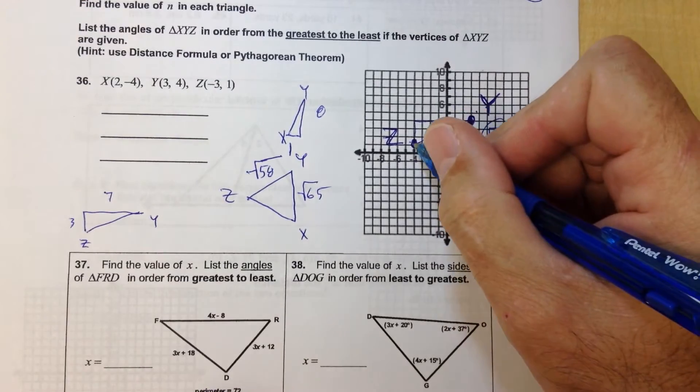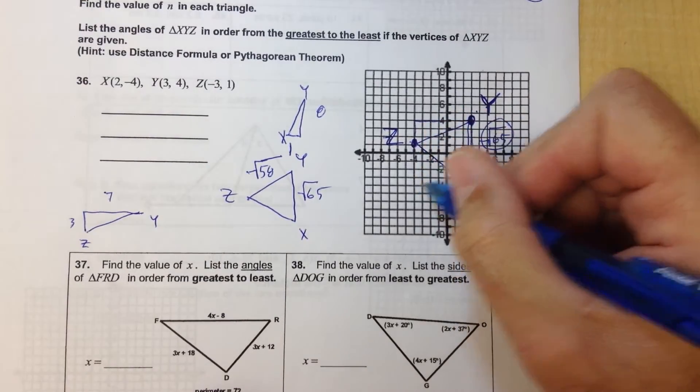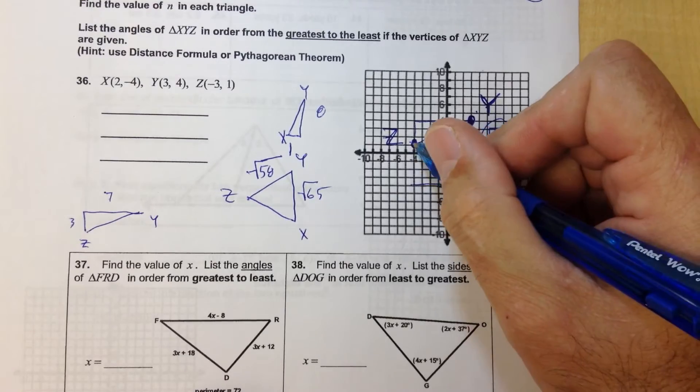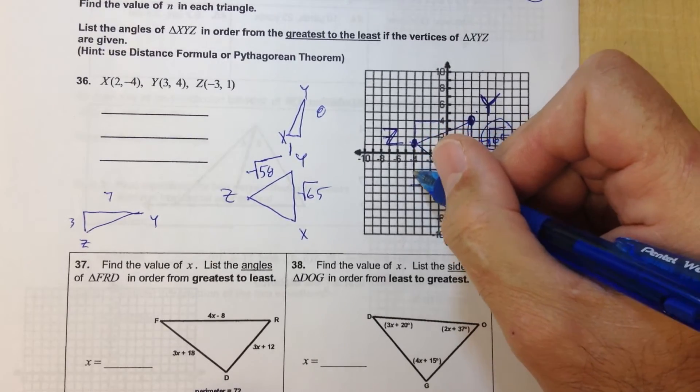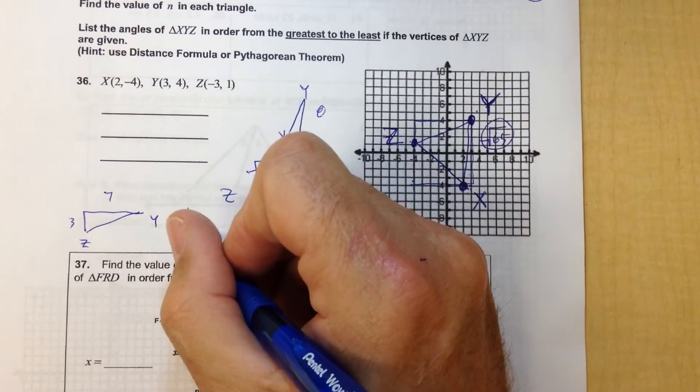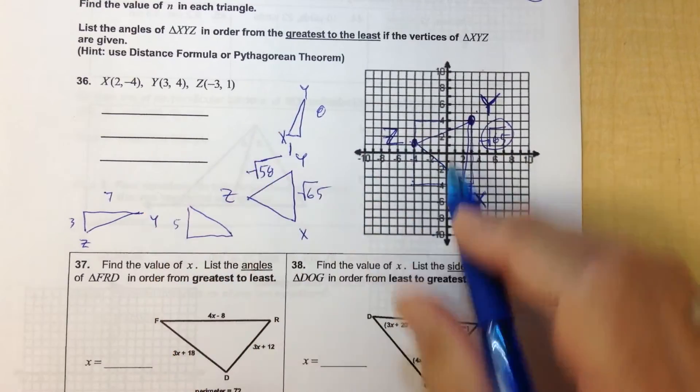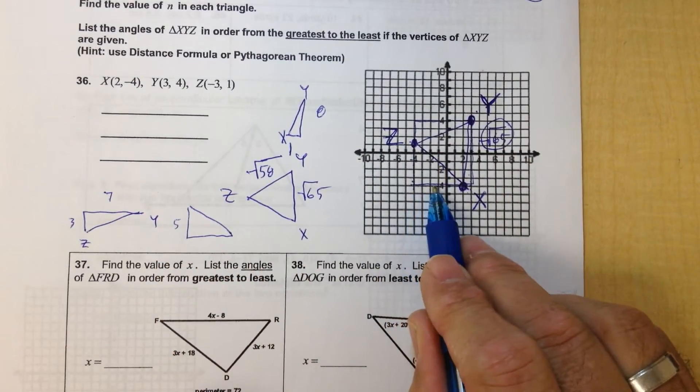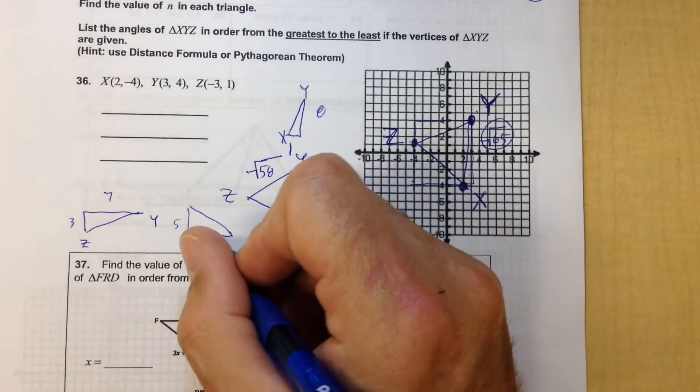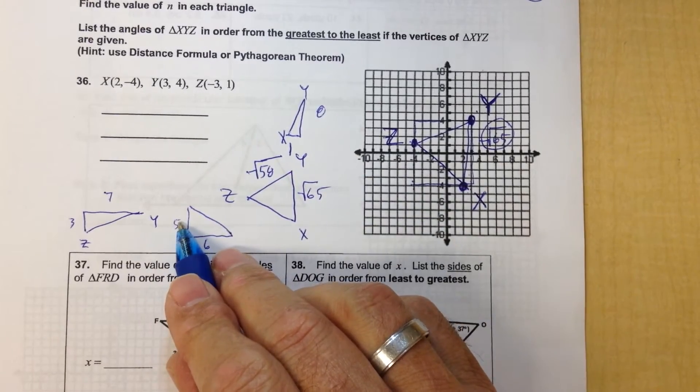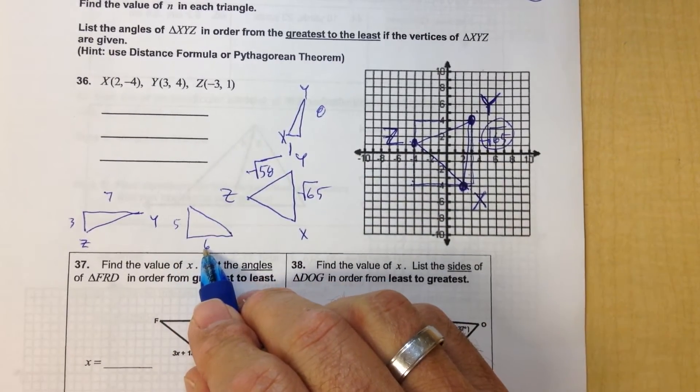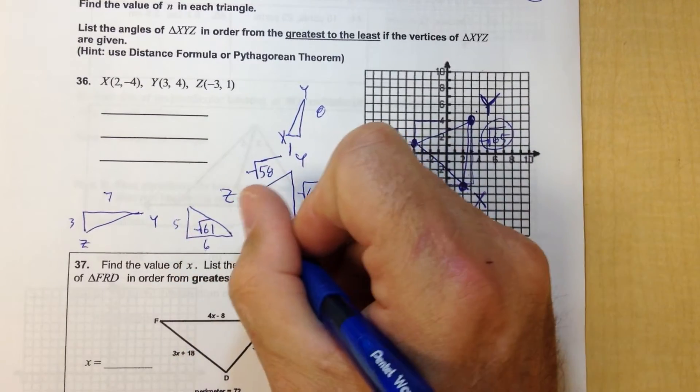And then lastly, from Z to X, I'm going to go down and I'm going to go over. I go down 1, 2, 3, 4, 5. So I'm going to draw it right here. Down 5 and over 1, 2, 3, 4, 5, 6. 5 times 5 is 25, 6 times 6 is 36. And you get the square root of 61 if you add those up.